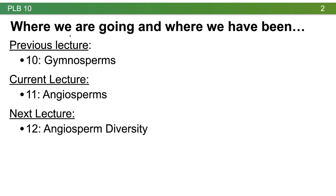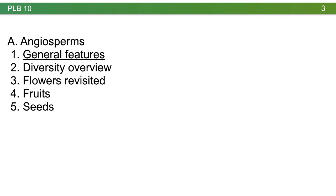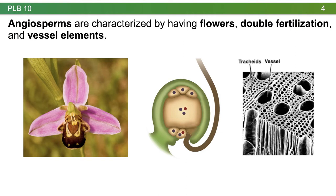Let's revisit the general features of angiosperms. Broadly, angiosperms are part of the lineage called seed plants, which include gymnosperms and angiosperms. Seed plants both make seeds and pollen, but angiosperms have some special features that make them stand out: those features are flowers, double fertilization, and vessel elements.